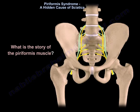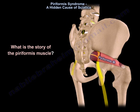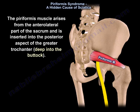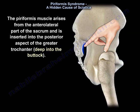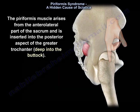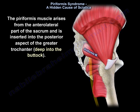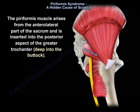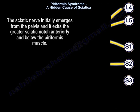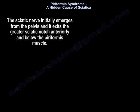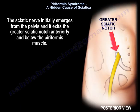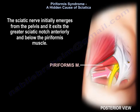What is the story of the piriformis muscle? The piriformis muscle arises from the anterolateral aspect of the sacrum and is inserted into the posterior aspect of the greater trochanter, deep into the body. The sciatic nerve initially emerges from the pelvis and exits the greater sciatic notch anteriorly and below the piriformis muscle.